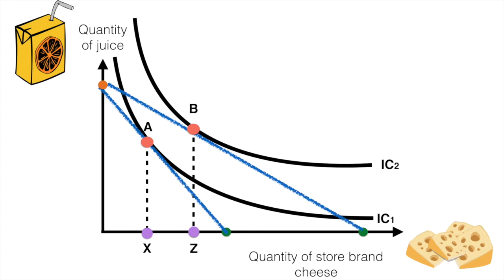From this, we can see that cheese consumption has increased from X to Z units. Now that we see the overall change in the consumption of cheese as price falls, we have to break out the impact of the substitution and income effects.